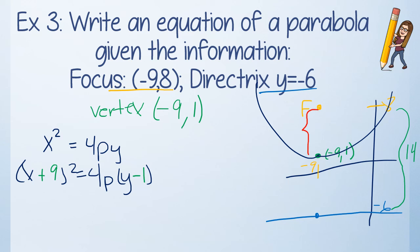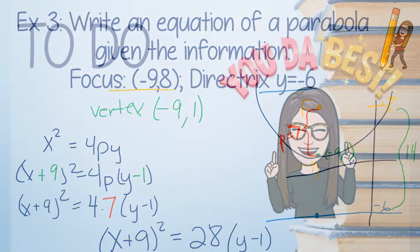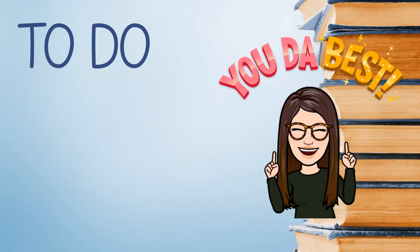And then let's talk about that distance. My p value, focus to vertex, is a distance of 7. We just used that 7. So my p value is 7. Then I need to decide positive or negative. And in this case, it's going up. So it would remain positive. So to write this nice, I would have (x + 9)² = 28(y - 1).